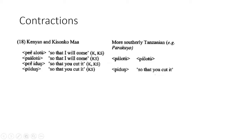You start to see — at what point do we say that we've just got a pe prefix here? Further south in Tanzania, comparing Kisongo and Parakuyo forms, palotu becomes palotu with vowel shortening, and peedum becomes pedum, so now it looks like you just have a prefix, losing the vowel length and the independent form.